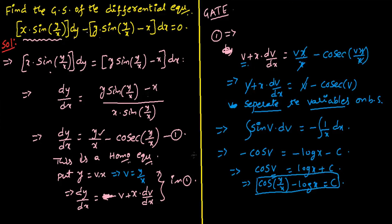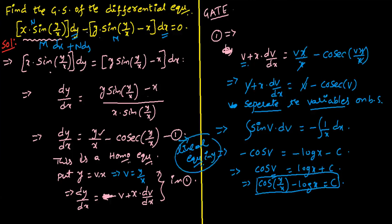We can also solve this problem using the M dx plus N dy form, where M and N are identified carefully from the given equation. Additionally, equation (1) can be treated as a linear equation and solved by that method as well. In this way we can easily solve the problem. Thank you very much. In the next video I will give more problems on first order differential equations.